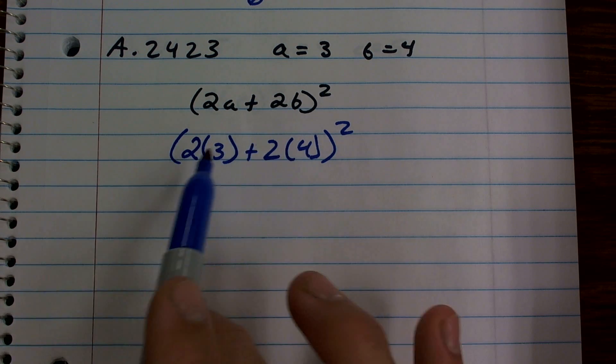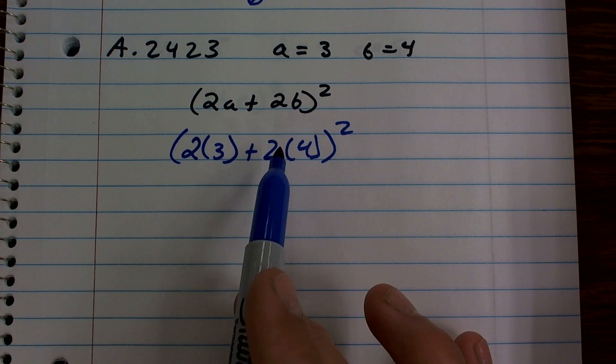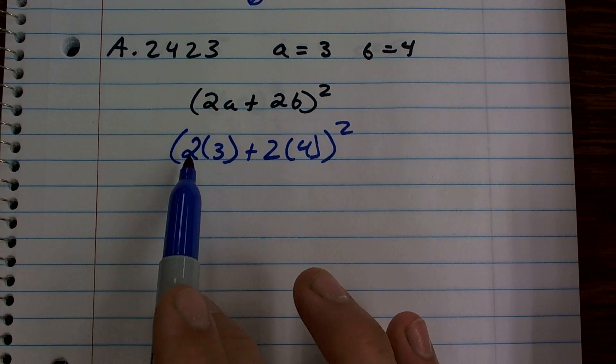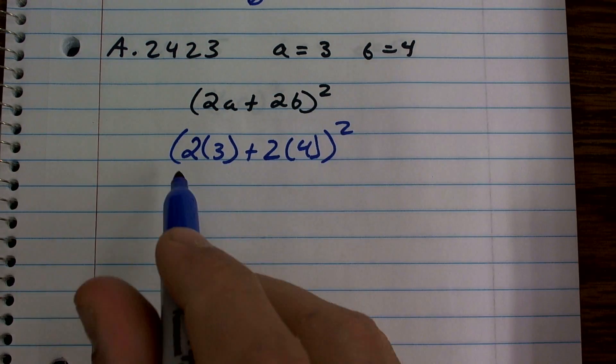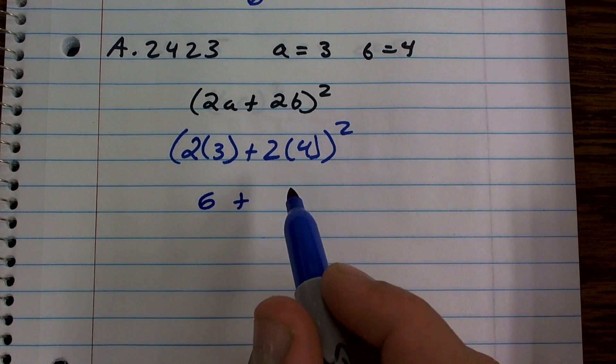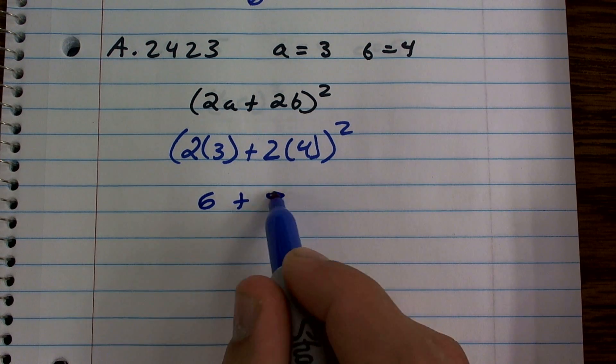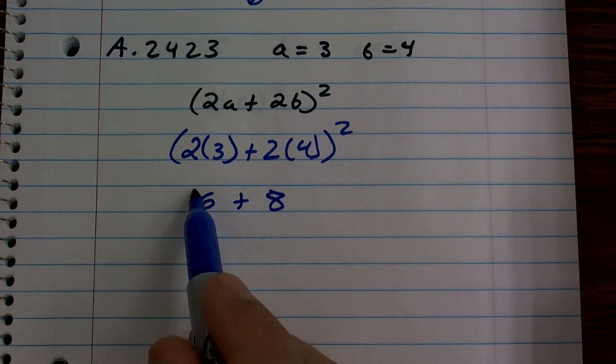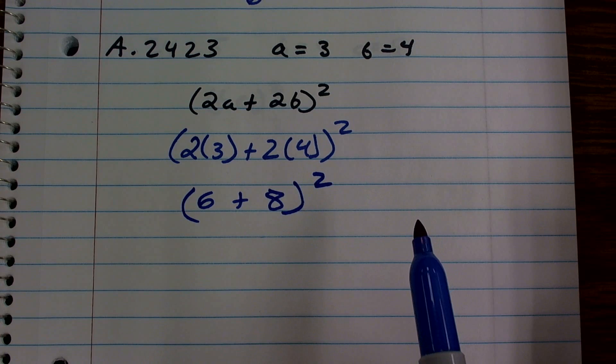There's no powers going inside these parentheses. But then I have multiplication I can do. I can do 2 times 3 and 2 times 4. 2 times 3 gives me 6 plus 2 times 4 gives me 8. That's still inside the parentheses and squared.